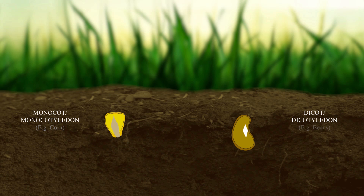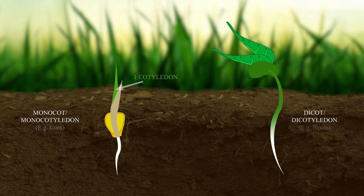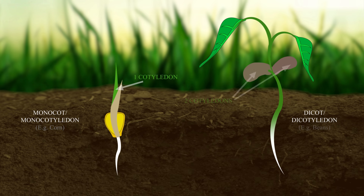The name provides the first hint, since monocotyledons have one cotyledon and dicotyledons have two cotyledons. A cotyledon is an embryonic leaf, and it is the first leaf to appear once a seed has germinated. These embryonic leaves help the new plant access the nutrients stored in the seed, giving it a source of nutrients until the true leaves are formed and start to photosynthesize.